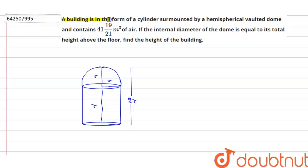Hello everyone. Our question is: a building is in the form of a cylinder surmounted by a hemispherical vaulted dome and contains 41 and 19/21 cubic meters of air. If the internal diameter of the dome is equal to its height above the floor, find the height of the building.